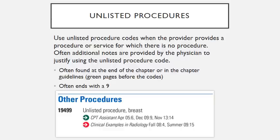Unlisted procedures are used when a provider performs a procedure or service for which there is no specific CPT code. Additional notes are often provided by the physician to justify using the unlisted procedure code. These unlisted procedures are often found at the end of the chapter or in the chapter guidelines, and they often end with a nine. For example, at the end of the integumentary section in the breast skin section, you'll find the unlisted procedure code.